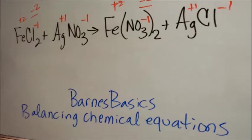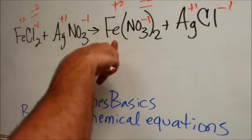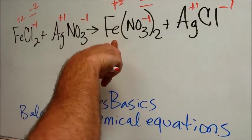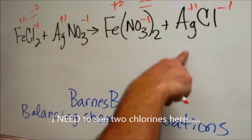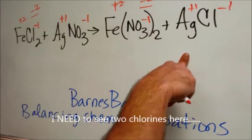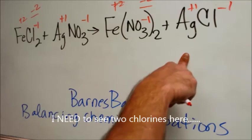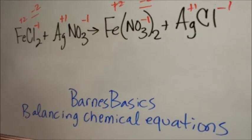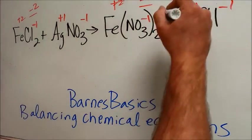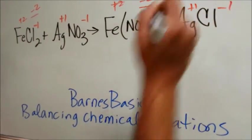So when I look at this equation, I see one iron here, I see one iron here. I see two chlorines here and I see two right here. So we could go ahead and deal with this. Let's put a two, let's put a two right here and see what happens.